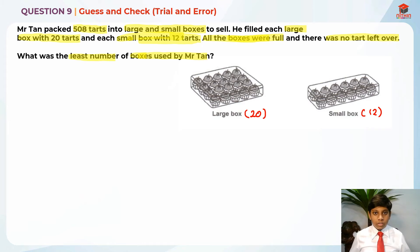In order to find the least number of boxes, we need to have the most to be the large boxes. In the large boxes there is 20, right? So 20 is greater than 12, and 12 is less than 20. This is why we should choose the most to be the large boxes. Then only we can get the least number of boxes used.